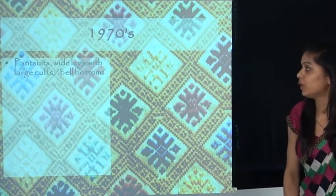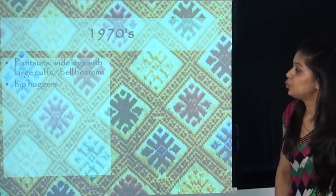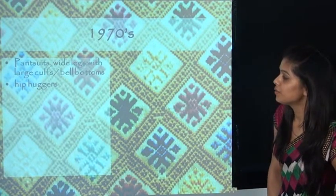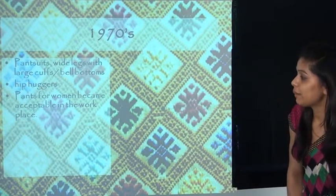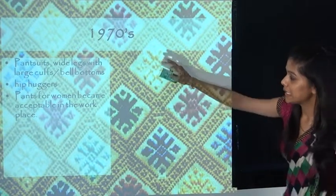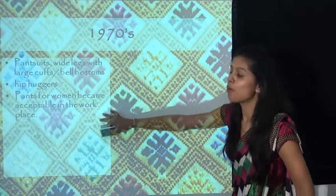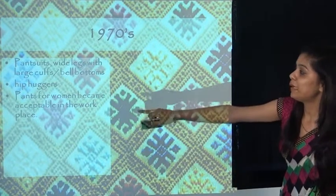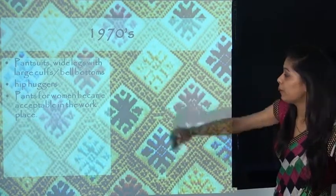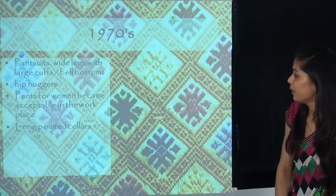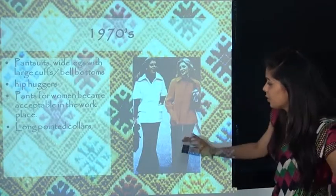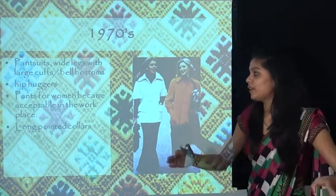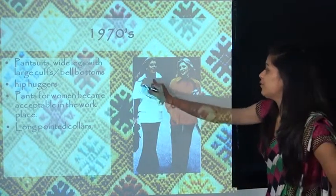The 1970s brought the pantsuit with wide legs, large cuffs, bell bottoms, and hip huggers. Pants for women became acceptable in the workplace — in the 1970s, pants began to be worn for formal and office purposes. We can see in this image a full pant with a wide bell bottom at the bottom, worn with a white coat and white collar. The 1970s also featured printed gowns with smooth, flowing falls.